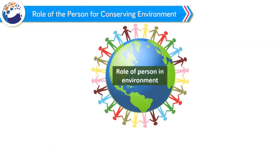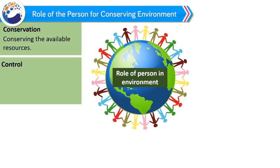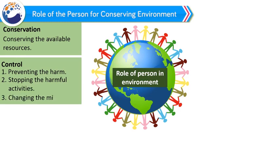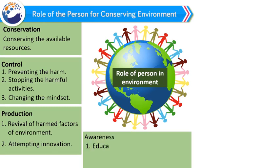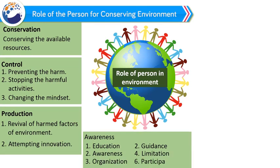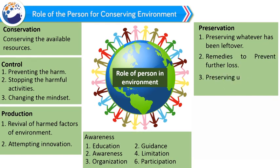Role of the person for conserving environment: Conservation involves conserving the available resources. Control means preventing harm, stopping harmful activities, and changing the mindset. Production involves revival of harmed factors of the environment and attempting innovation. Awareness involves education, guidance, imitation, organization, and participation. Preservation involves preserving whatever has been left over, remedies to prevent further loss, and preserving unknown regions.